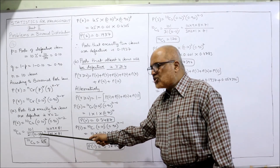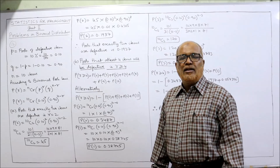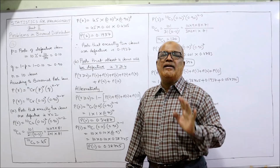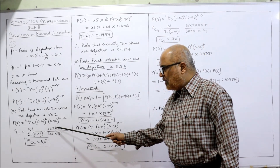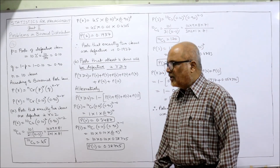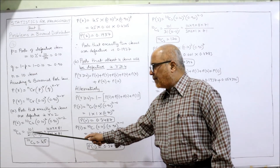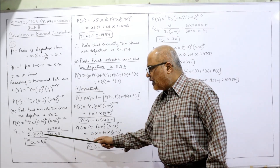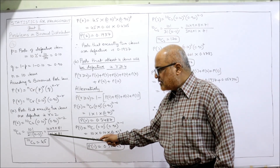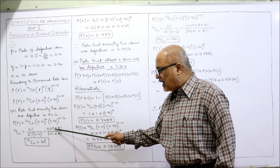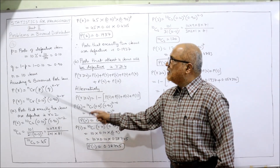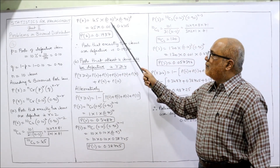The numerator is 10 × 9 × 8!, and since 8! appears in the denominator it cancels. The denominator becomes 2! = 2 × 1. So we get (10 × 9) / 2 = 45. Therefore 10C2 = 45.